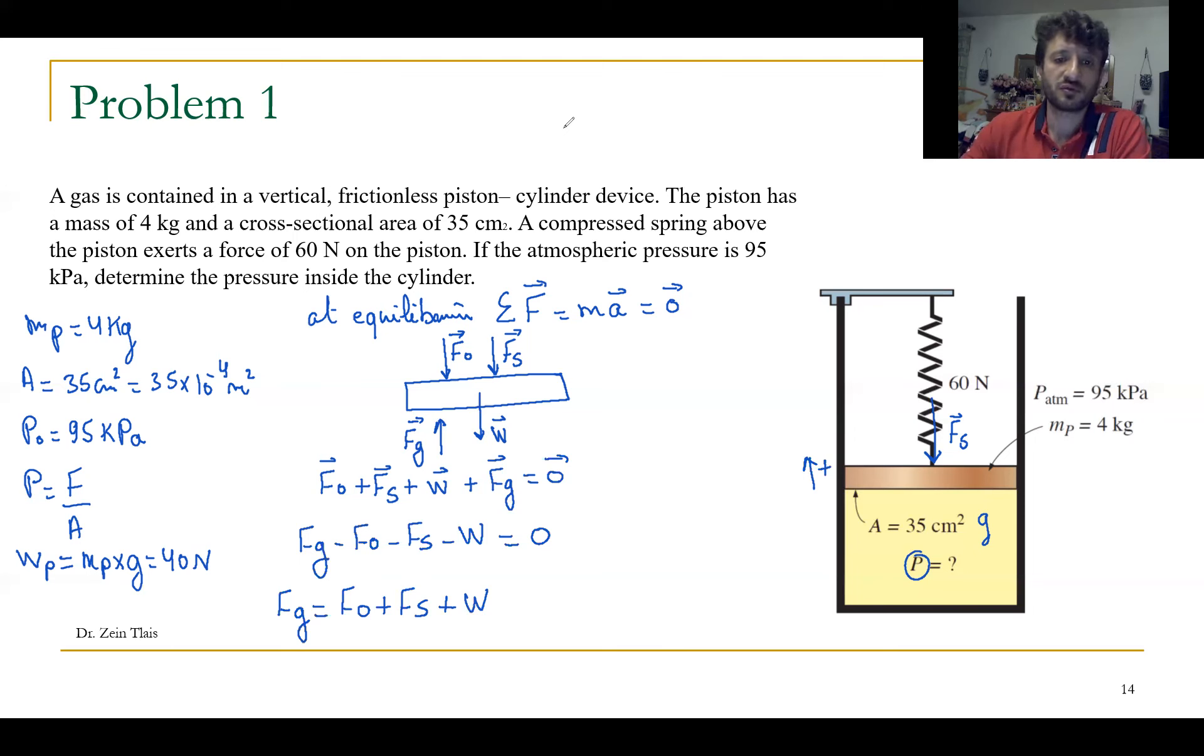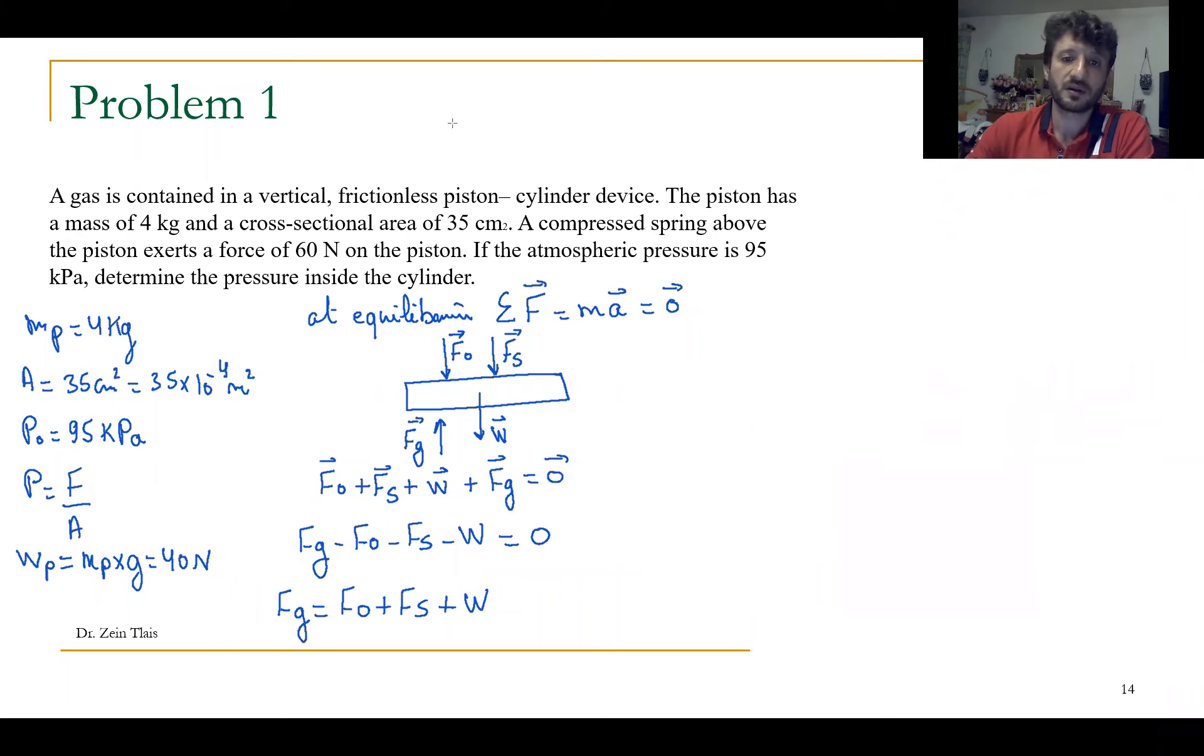Now I want to substitute the value of F in function of P. So we can say Fg equals to P of the gas times S times A. Equals to F0. We have P0 times A. Fs equals to F equals to 60 Newton. And we have the weight equals to 40.